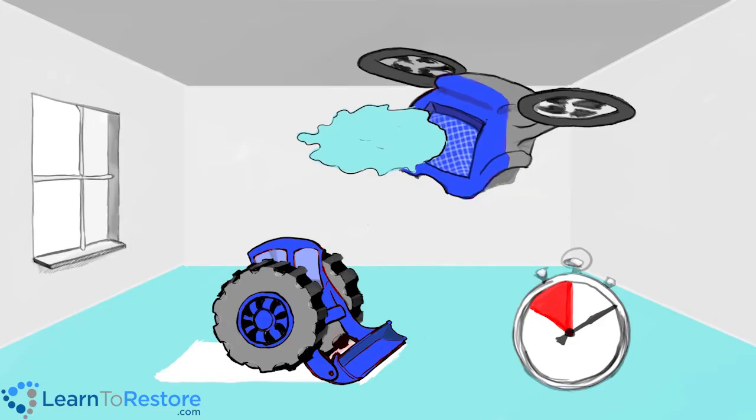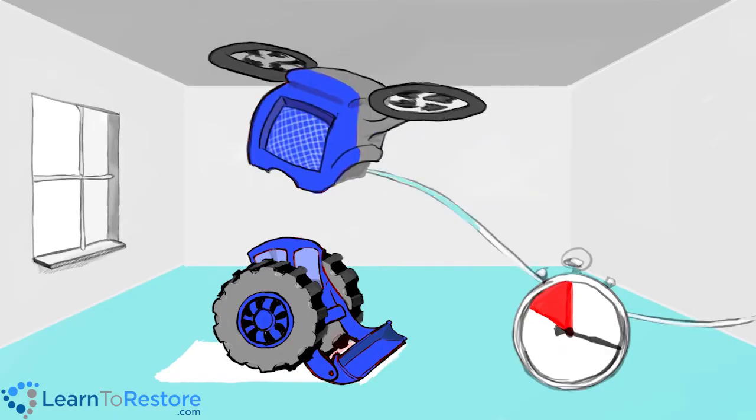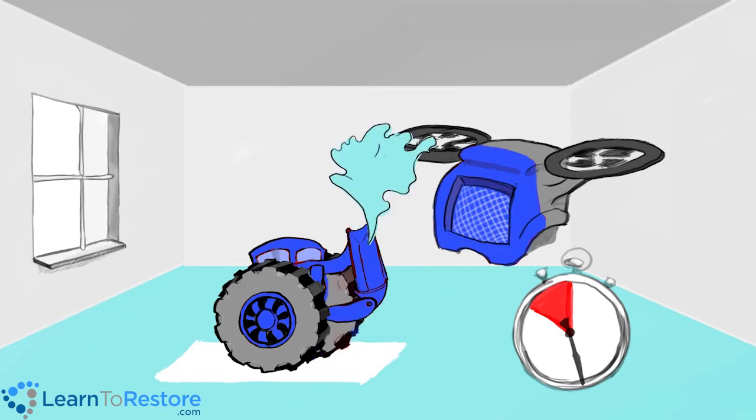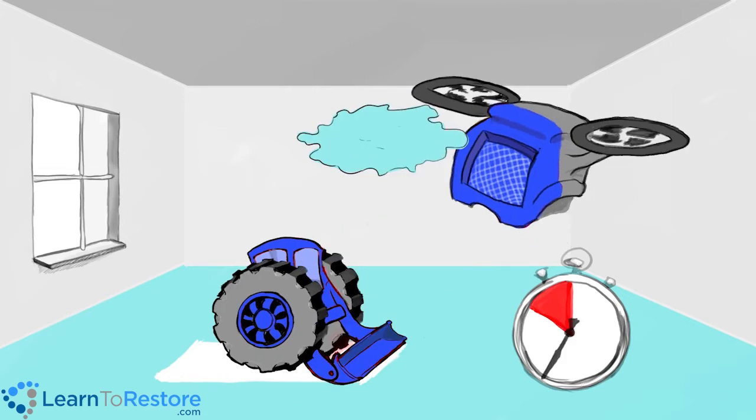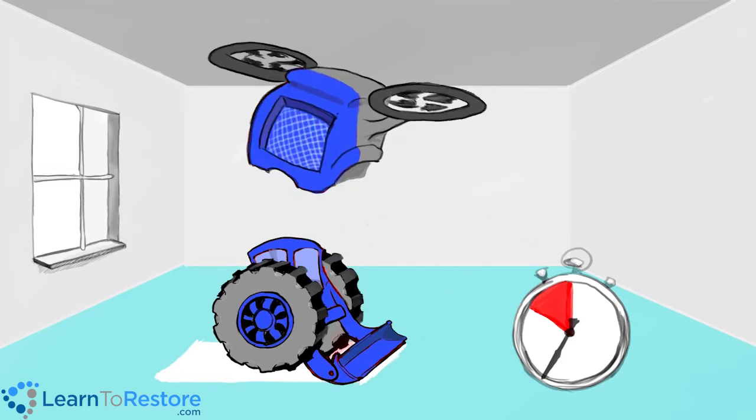Essentially, the airmover scoops the water up into the air, and the dehumidifier removes it. The goal is a balance, so the moisture coming into the air is all being removed.